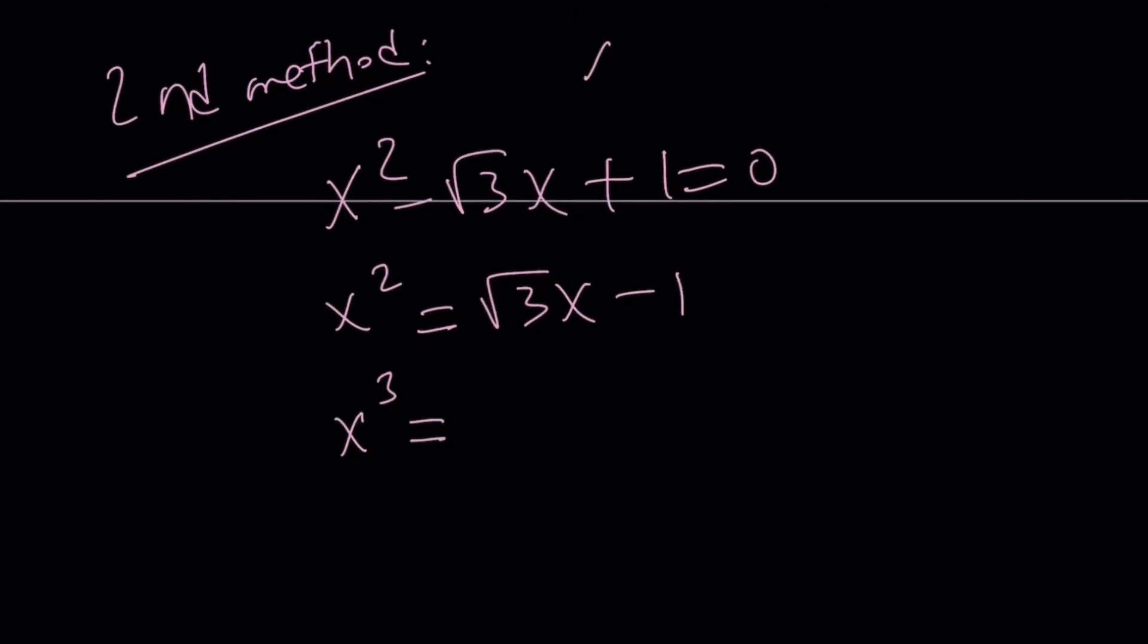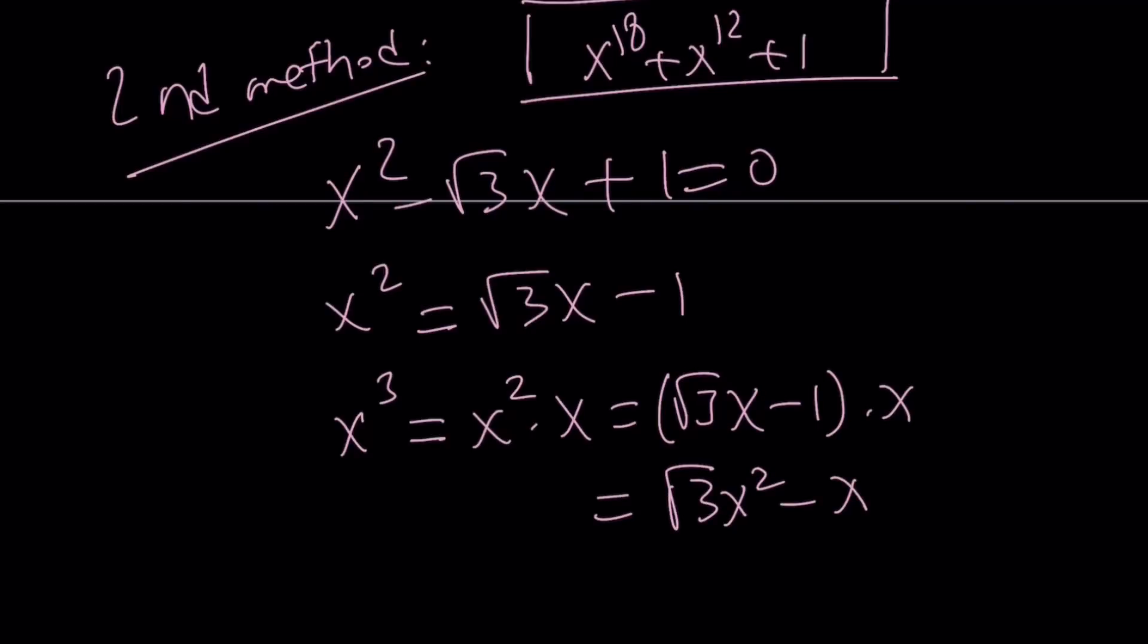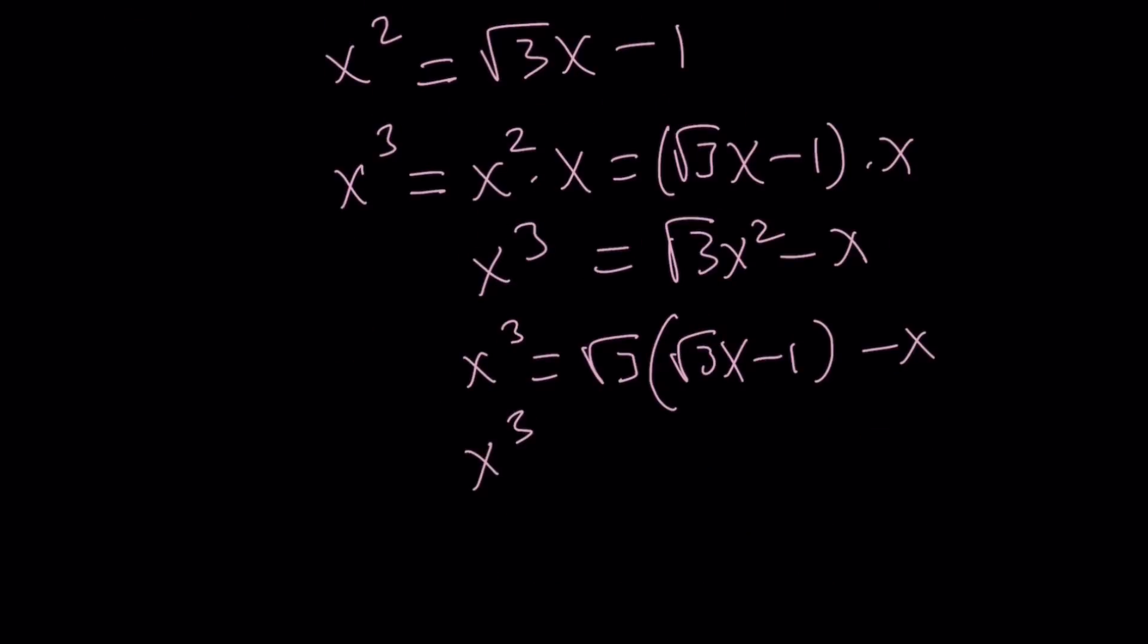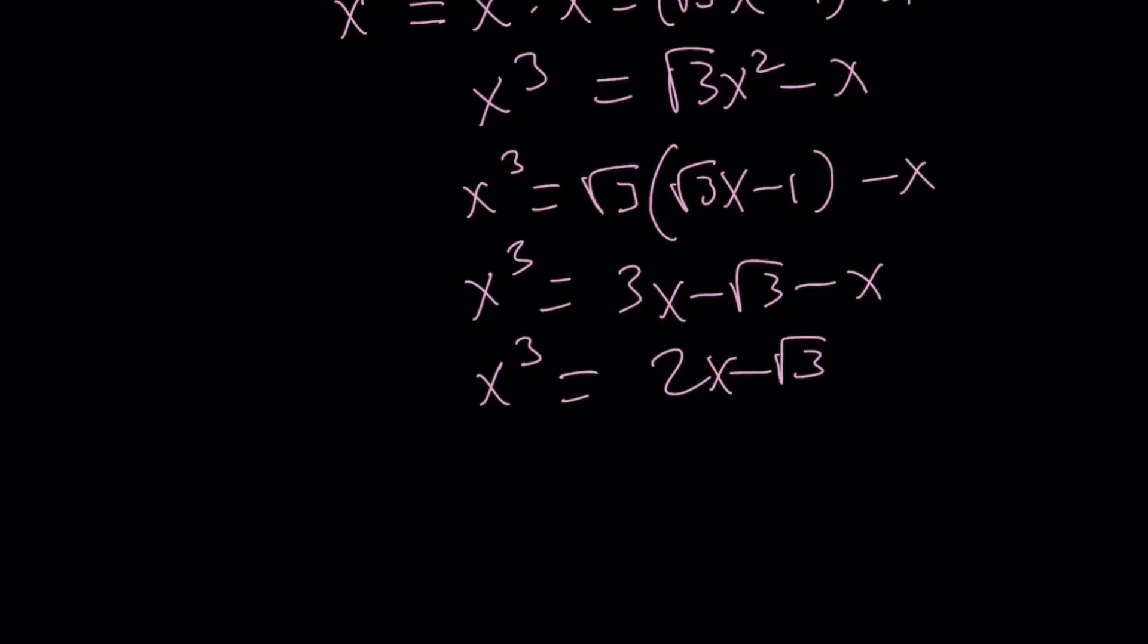For example, if I wanted to evaluate x cubed, by the way, the 18th power and the 12th power should kind of ring the bell, because they're both multiples of 6, or multiples of 3. x to the 3rd power is x squared times x, but x squared is root 3x minus 1, multiply by x, you get square root of 3x squared minus x. And then now, x squared can be replaced with square root of 3x minus 1, and then if you distribute, you're going to get 3x minus square root of 3 minus x. From here, x cubed is going to be 2x minus square root of 3. I know this is not very impressive, but guess what? I can write x cubed in terms of x, so let's go ahead and plug it in.